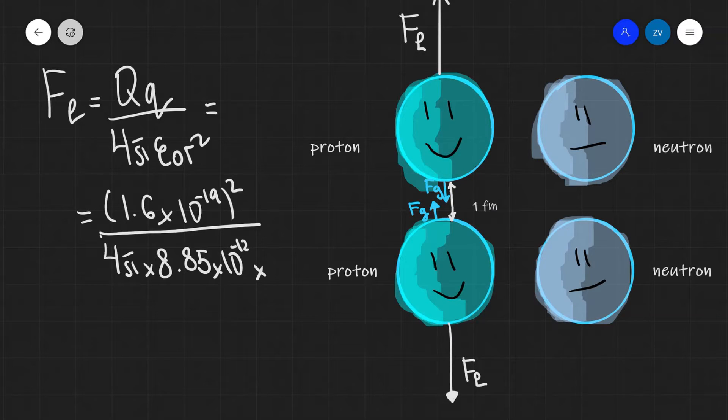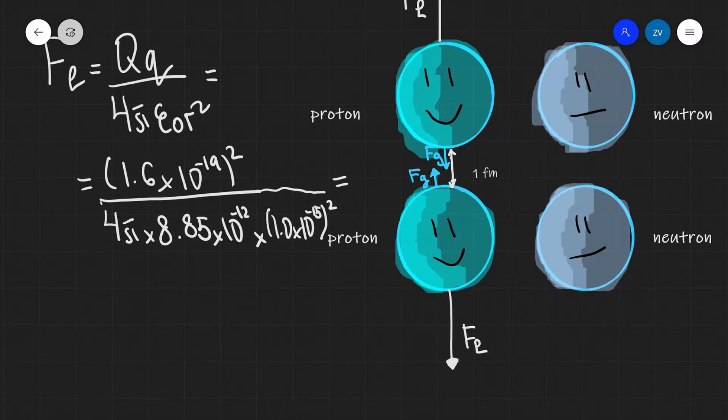Now, R in this case is 1 femtometer. Remember, femto stands for 10 to the power of minus 15. So, 1.0 times 10 to the power of minus 15, and then all of this is squared. When we input this into a scientific calculator, we're going to get that the electrostatic force is 230 newtons.